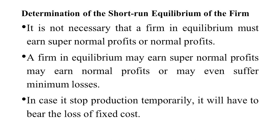Now we discuss the short-run equilibrium of the firm. It is not necessary that a firm in equilibrium must earn super normal profit or normal profit. A firm in equilibrium may earn super normal profit, may earn normal profit, or may even suffer minimum losses. This is the condition in the short run. If the firm stops production temporarily, it will have to bear the loss of fixed cost, since fixed cost remains whether there is production or not.